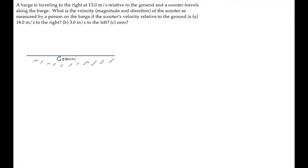In every relative velocity problem, there will be at least two frames of reference and an object that's being tracked. In this case, one frame of reference is the ground — we'll call that G. Another frame of reference is the barge, call that B. We're told it is moving to the right at 13 meters per second. That's the velocity of the barge relative to the ground.